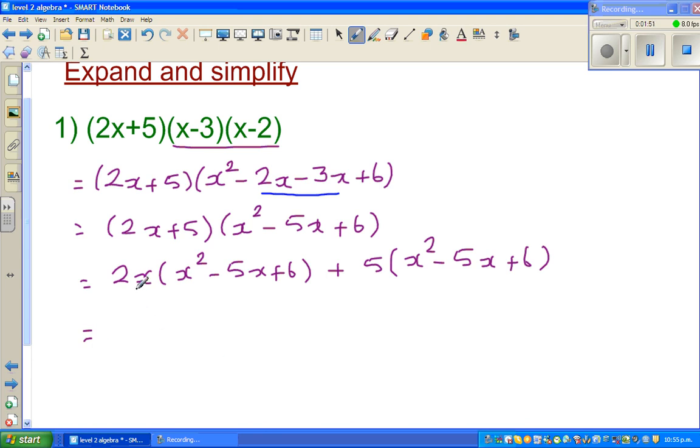Now you're multiplying 2x with x squared, which is 2x cubed. Then 2x times minus 5x is minus 10x squared, plus 2x times 6 is plus 12x. Now 5 times x squared is 5x squared. I'll write plus 5x squared here. Then 5 times minus 5x is minus 10x. And 5 times plus 6 is plus 30.